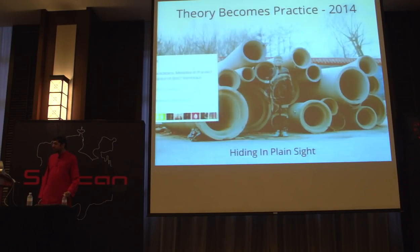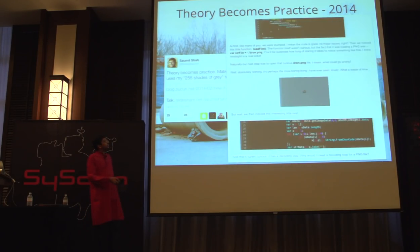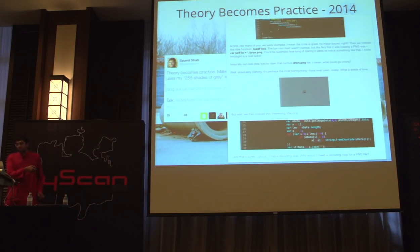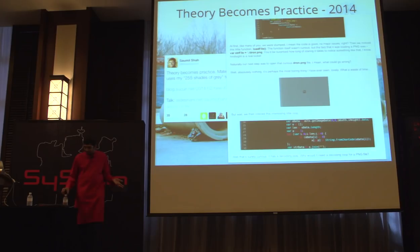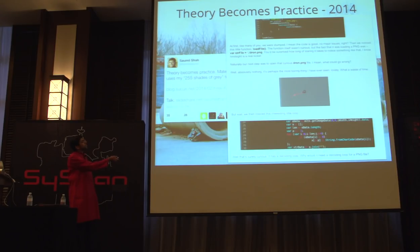All this was theory until it became practice in 2014. Sucuri tweeted out saying they'd found some wild new evil technique encoding deadly pixels. Here's their blog post — actually all this code is my code. Somehow it's an old piece of code using the same variables. I had actually lifted it from Ajaxian.com where somebody was talking about decoding their own JavaScript, and I applied it to Canvas. The whole technique became practice and there was malware in the wild transmitting exploits using these images.